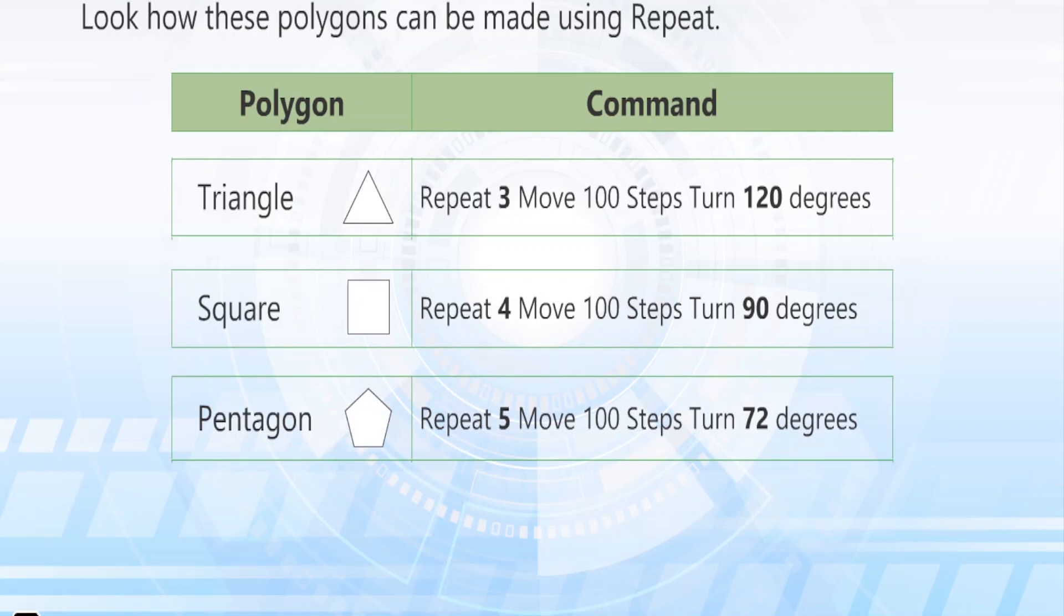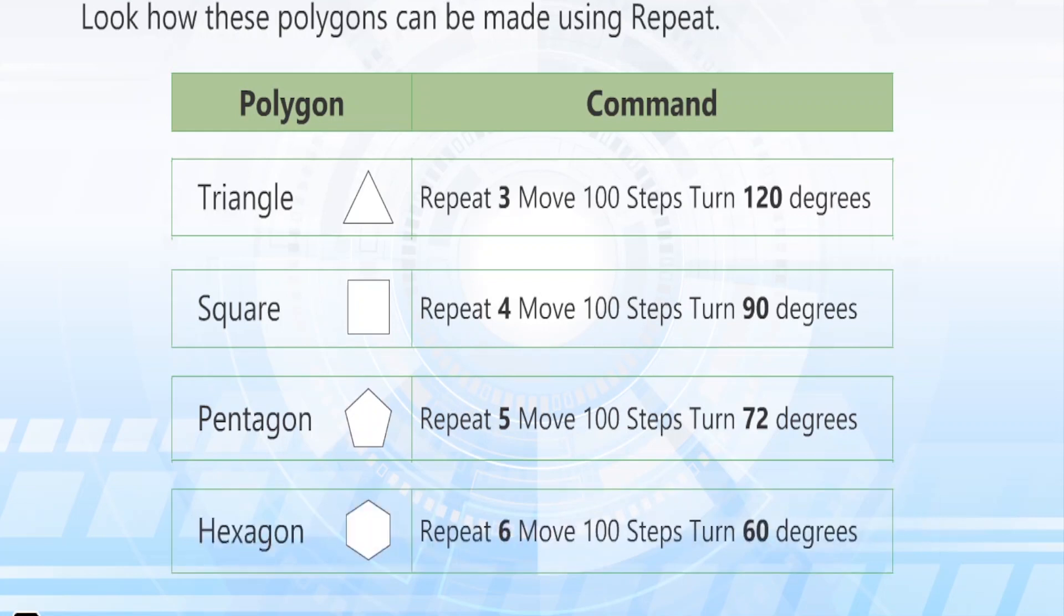Pentagon: Repeat 5, Move 100 steps, Turn 72 degrees. Hexagon: Repeat 6, Move 100 steps, Turn 60 degrees.